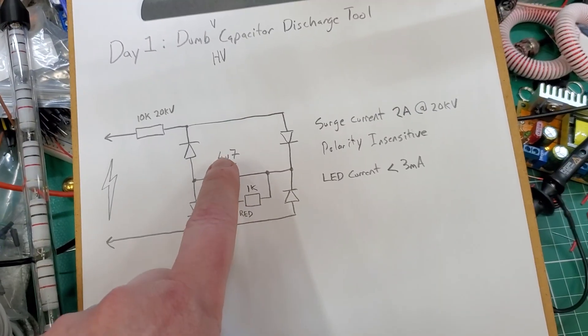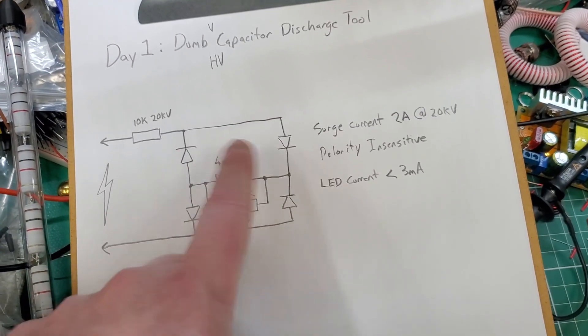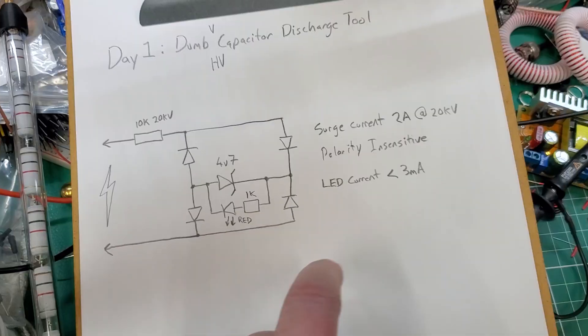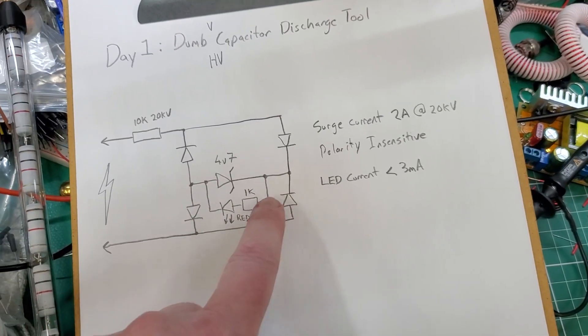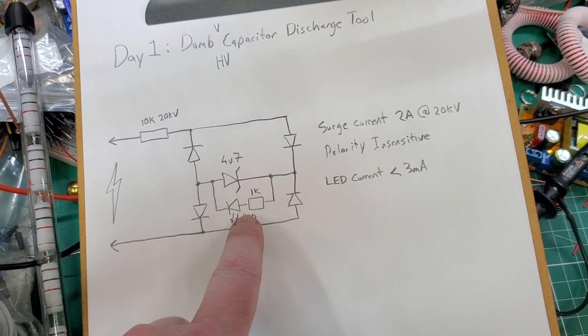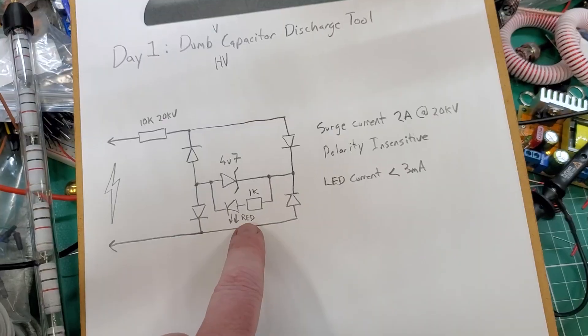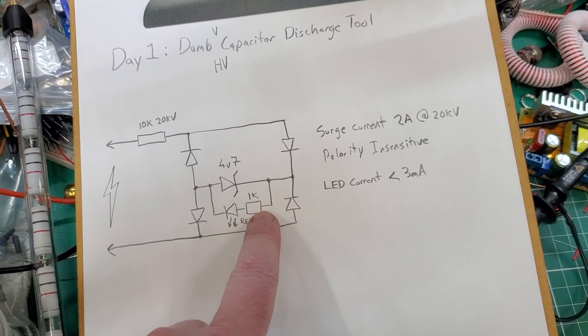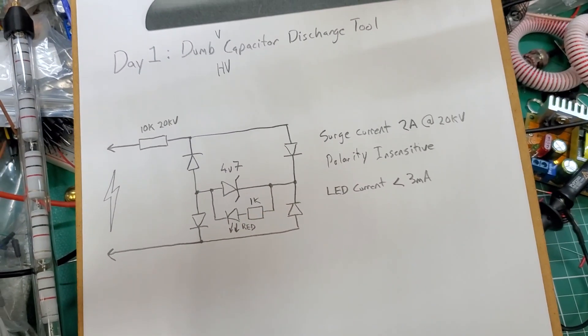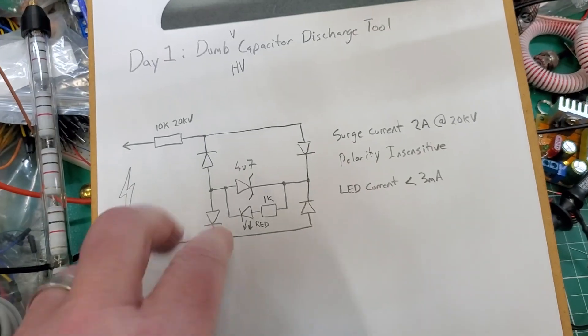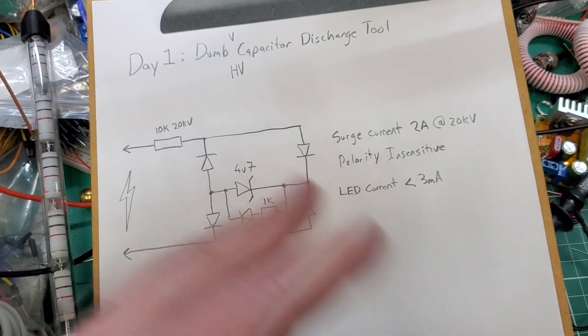Then we have a Zener diode that drops a constant voltage as long as the voltage across there is exceeding the breakdown voltage of the Zener. This is essentially a shunt regulator. It provides 4.7 volts to this LED that's got a dropping resistor. So the LED current is at most about 3 milliamps regardless of the voltage of the capacitor as it discharges.